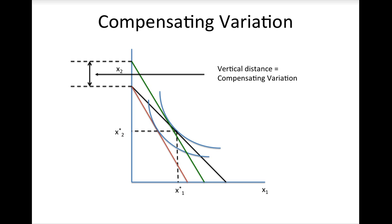To calculate the compensating variation, simply calculate the vertical distance between the red budget line and the green budget line. This is the consumer's compensating variation. Note that because we are paying the consumer compensation for the price change, we sometimes call this number the consumer's willingness to accept the price change. The bigger the number, the more worse off the consumer is as a result of the price change.